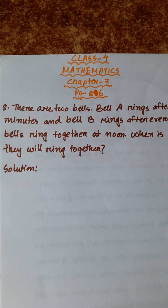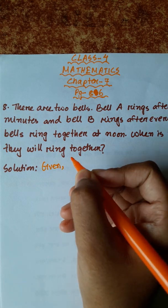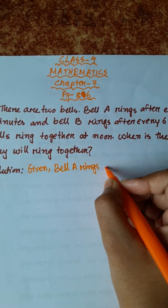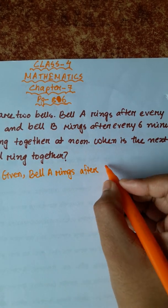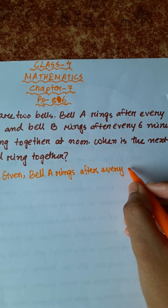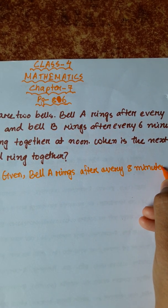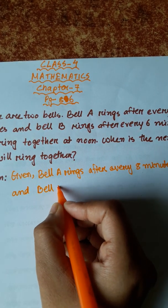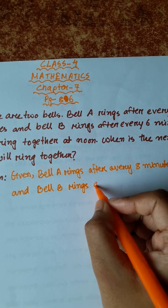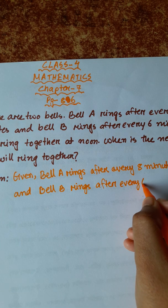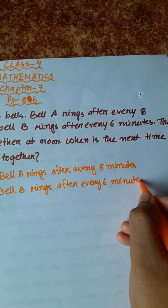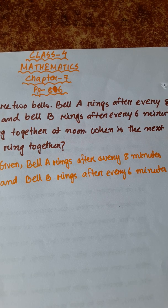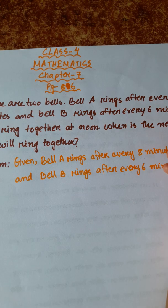Let's start solving this. First, we write the given information: Bell A rings after every eight minutes. Bell B rings after every six minutes. Now let's find the multiples of 6 and 8.